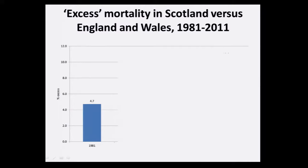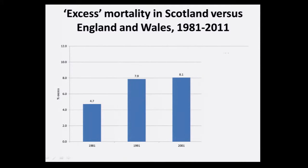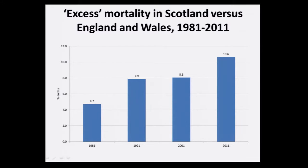In 1981, the year of the census, there was about a 5% increased mortality in Scotland relative to England and Wales. Ten years later there were marked increases, although with stabilisation. And then most recently, there's around a 10% excess of mortality in Scotland relative to England and Wales.